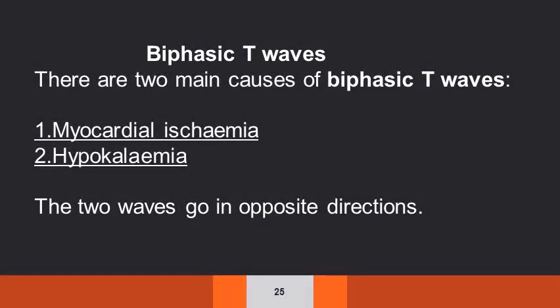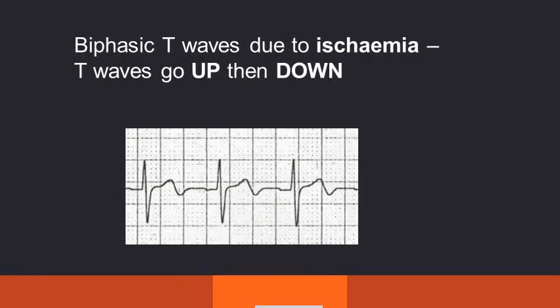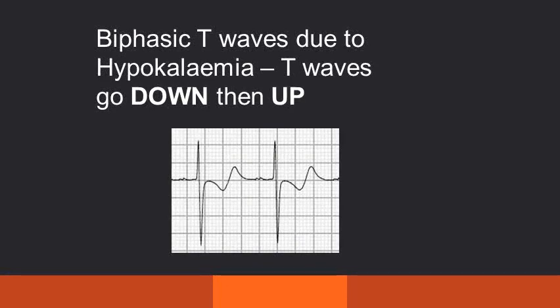Biphasic T waves have two main causes: myocardial ischemia and hypokalemia. In myocardial ischemia, the T waves go up and then down. Whereas in hypokalemia, the T waves go down and then up.